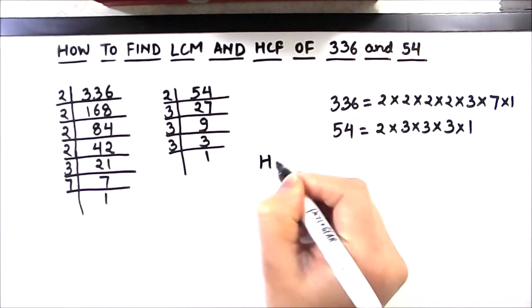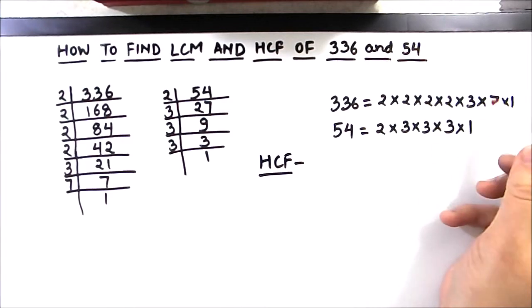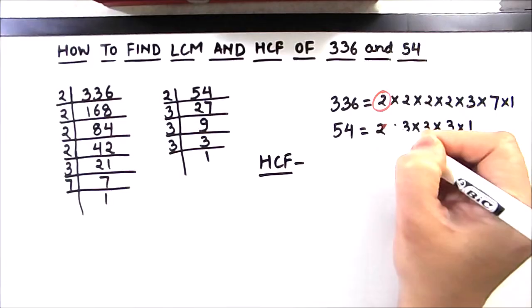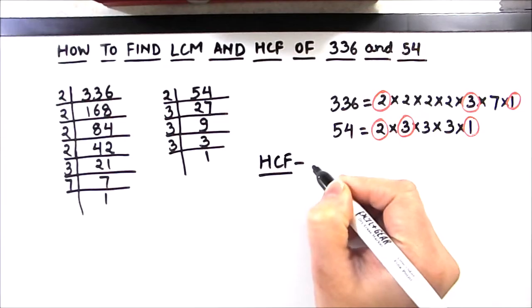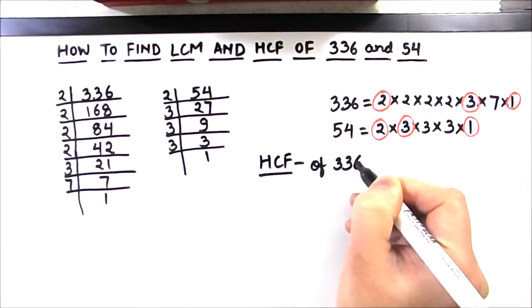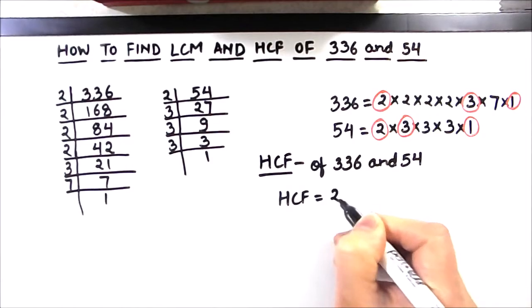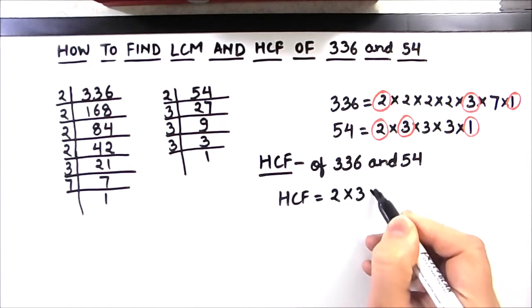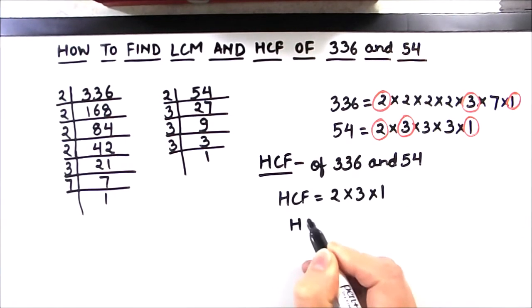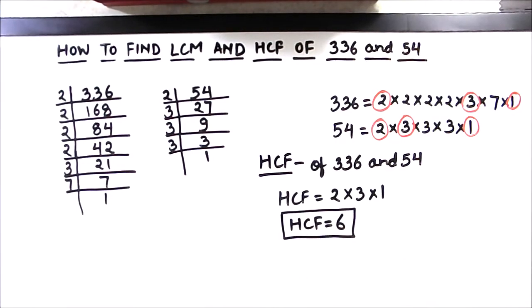Now we will find the HCF of the two numbers. To find the HCF we need to identify the common factors between the factors of both numbers. The common factors are 2, 3, and 1. We take the product of these common factors, writing each only once. So the HCF of 336 and 54 is 2 × 3 × 1, which equals 6.